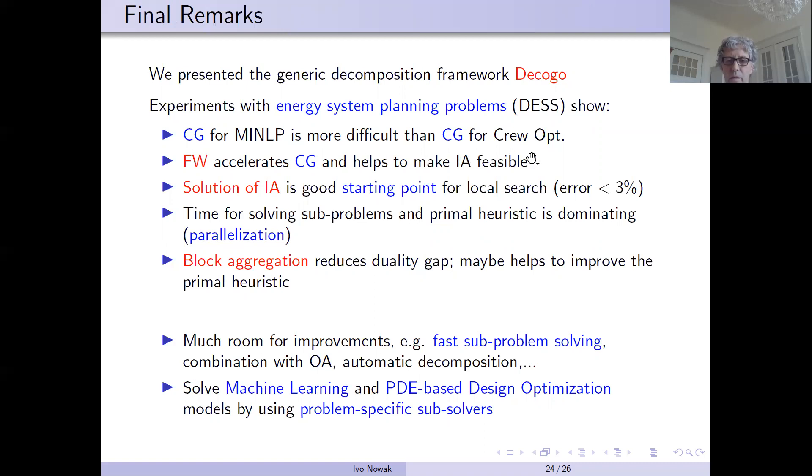Frank-Wolfe was important because it helped to find initial inner points, which makes the inner approximation feasible. Even if the relaxation is not so good, because we have a gap of 30%, you could find solutions which have an error of less than 3%.